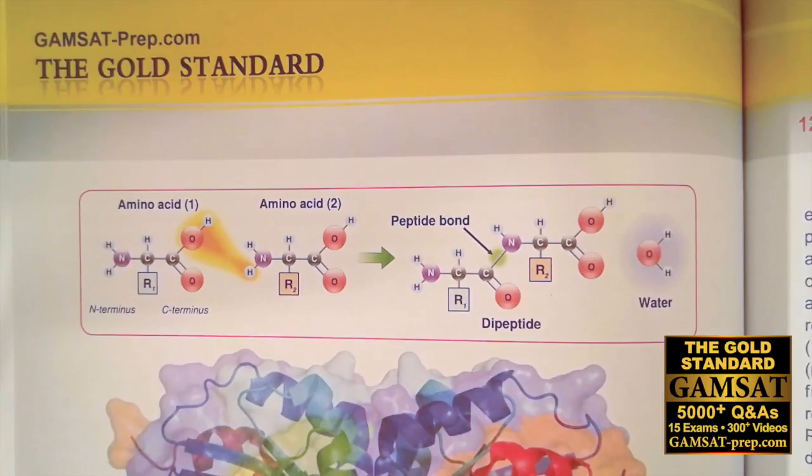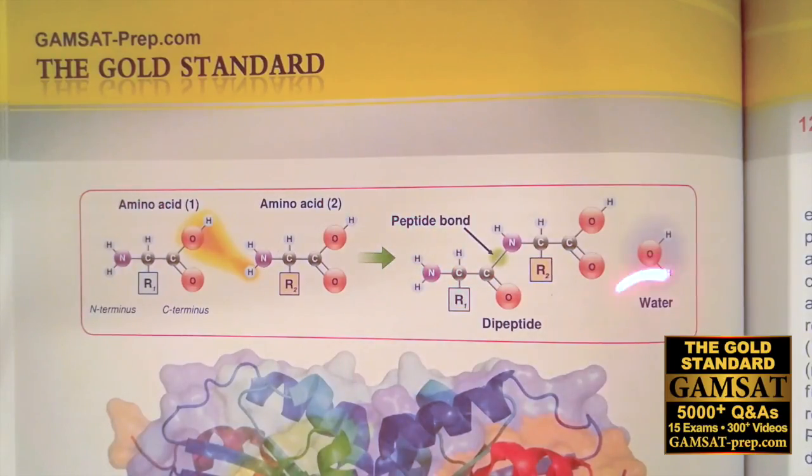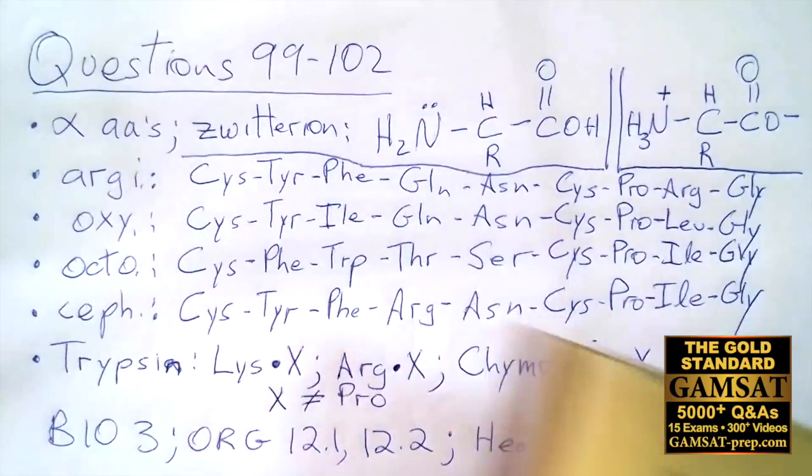Notice carefully the reverse reaction - water can be used to break the peptide bond. This reverse reaction is called hydrolysis. Hydro refers to water and lysis refers to something being broken apart. So water can hydrolyze peptides. Enzymes can facilitate this reaction, they can catalyze it, lowering the activation energy for the reaction to occur. This is where trypsin and chymotrypsin do their thing.